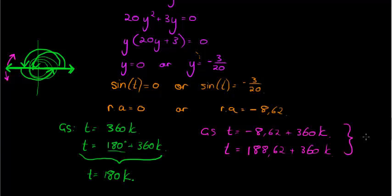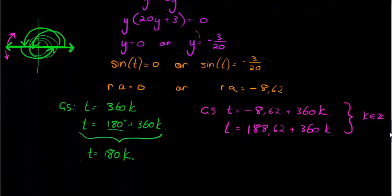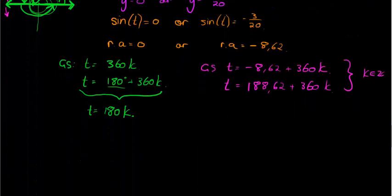Now in all four of these situations, k is an element of integers, and we are not finished because we are asked to find the solutions on this interval, which means we must go and substitute k with different values from starting with 0, going in the negative direction, in the positive direction, see which ones take me there.